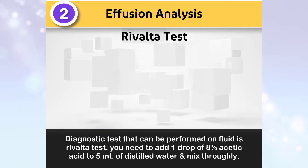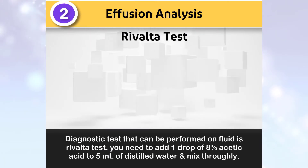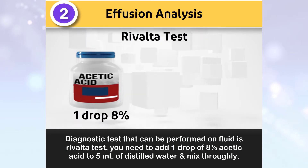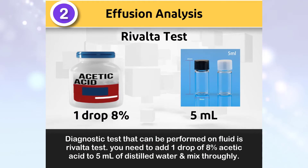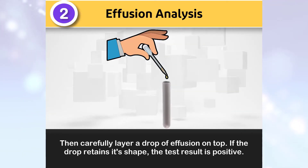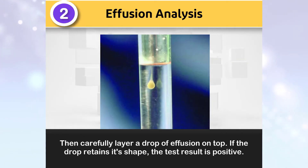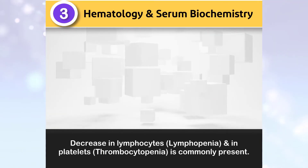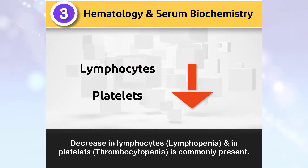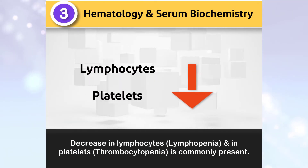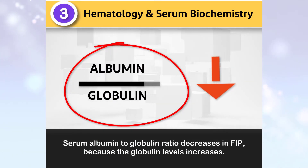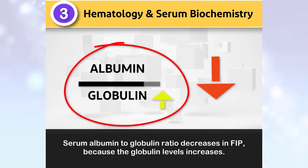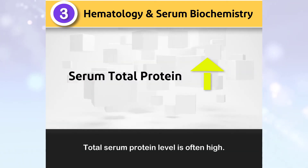A diagnostic test that can be performed on fluid is the Rivalta test. Add one drop of 8% acetic acid to 5 ml of distilled water and mix thoroughly. Then carefully layer a drop of effusion on top. If the drop retains its shape, the test result is positive. In morphology and serum biochemistry, a decrease in lymphocytes and platelets is commonly present. Serum albumin-to-globulin ratio decreases in FIP because globulin levels increase, so total serum protein level is often high.